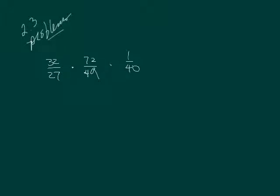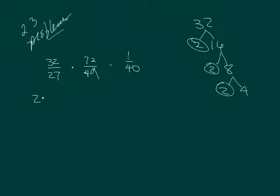I would like you to try doing these without a calculator. So 32 we're going to write as a product of primes. 2, 16, 2, 8, 2, 4, 2, 2. So I have 5 2's over 27 which is 3 times 3 is 9 times 3 is 27. 72, let's go ahead and do our product of primes with 72 here.